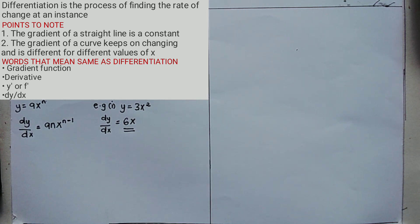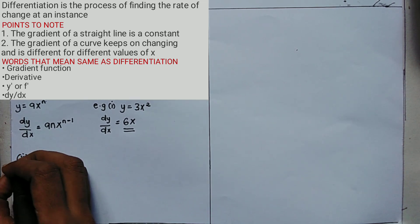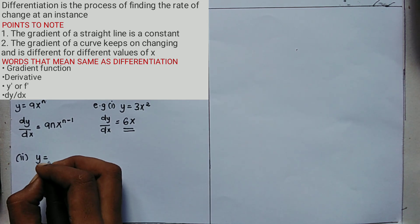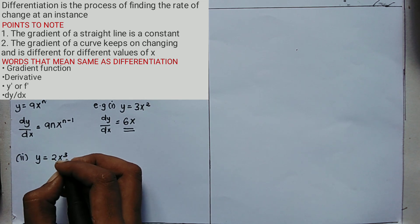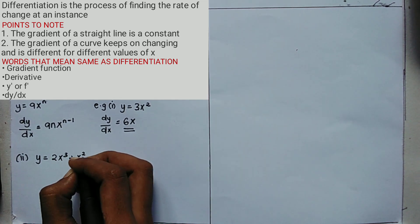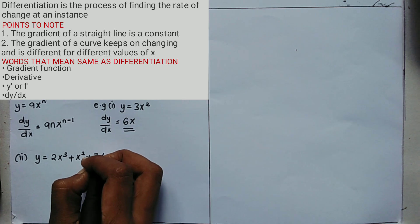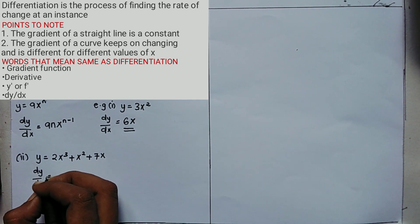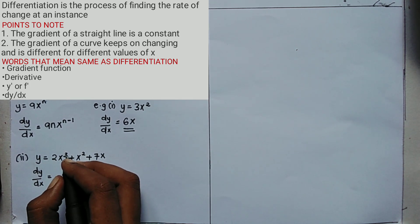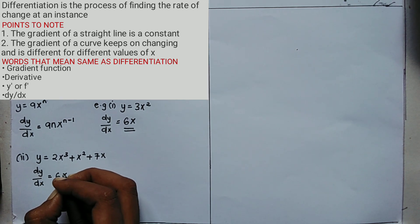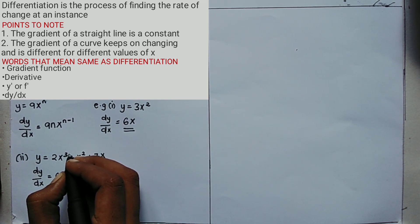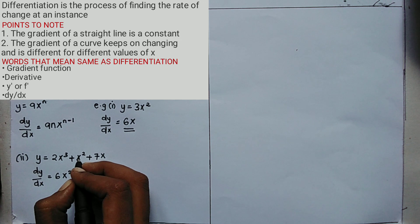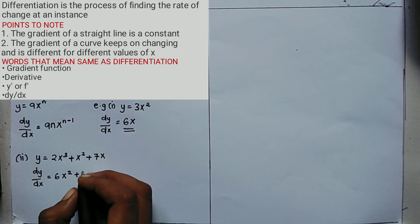The second example: differentiate y = 2x³ + x² + 7x. So dy/dx equals: multiply 2 by 3, giving 6x; subtract 1 from the power 3, giving 6x². For the second term, the coefficient is 1, so 1 times 2 gives 2x, and the power becomes 2 minus 1 = 1, giving 2x.